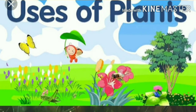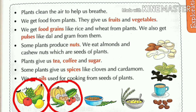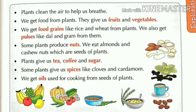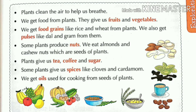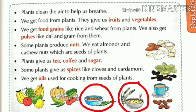Now let's see the uses of plants. Plants are useful to us in many ways. Plants clean the air to help us breathe. We get food from plants — they give us fruits and vegetables. We get food grains like rice and wheat from plants, and also pulses like dal and gram. Some plants produce nuts; we eat almonds and cashew nuts, which are seeds of plants. Plants also give us tea, coffee, and sugar, and some plants give us spices like cloves and cardamom.